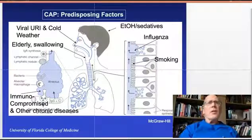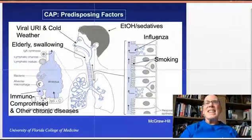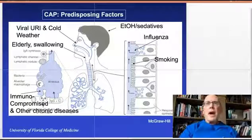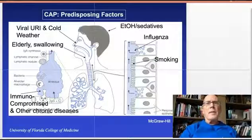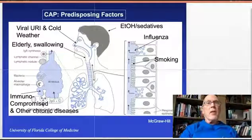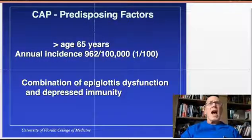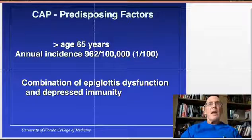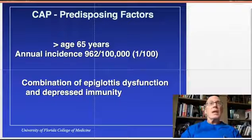Moving lower, dysfunction of the bronchial epithelial cells can also increase the risk of pneumonia. Smoking damages the cilia and results in thickened mucus that cannot be effectively transported. Influenza virus also damages bronchoepithelial cells and their microcilia. Finally, patients who are immunocompromised — including the elderly and those with chronic diseases — have impaired production of immunoglobulins and reduced cell-mediated immunity. The incidence of pneumonia among the elderly is notably high: one per hundred individuals over the age of 65 develop pneumonia each year, making it a leading cause of both hospitalization and death.